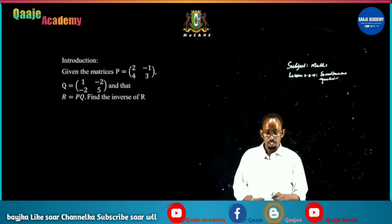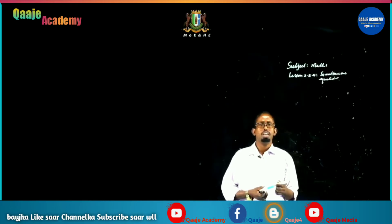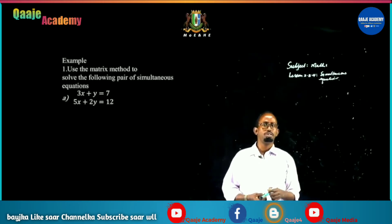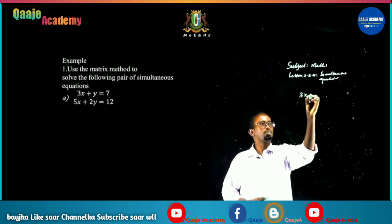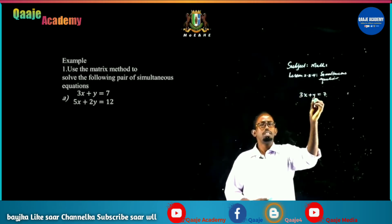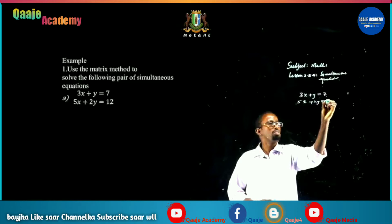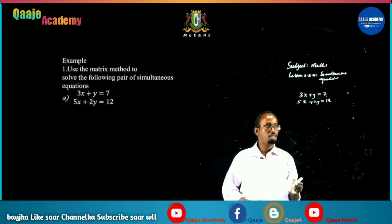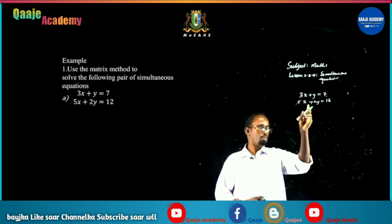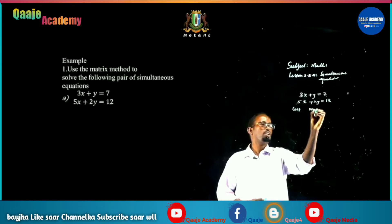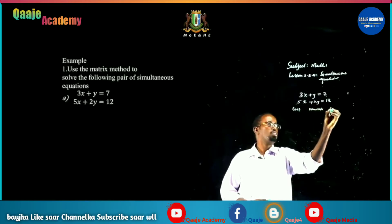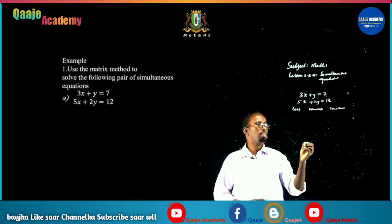In today's lesson, use the matrix method to solve the following simultaneous equations: A) 3x plus y equals 7, and 5x plus 2y equals 12. We use a matrix, starting with coefficients, variables, and constants.